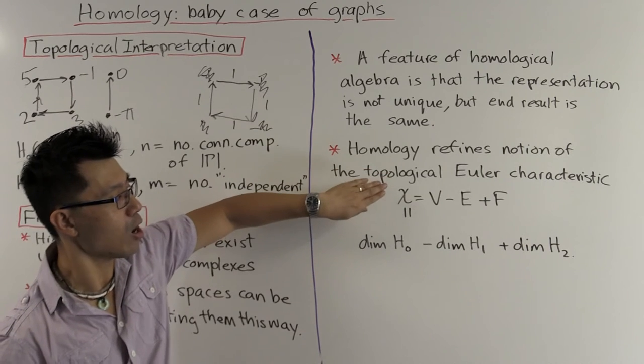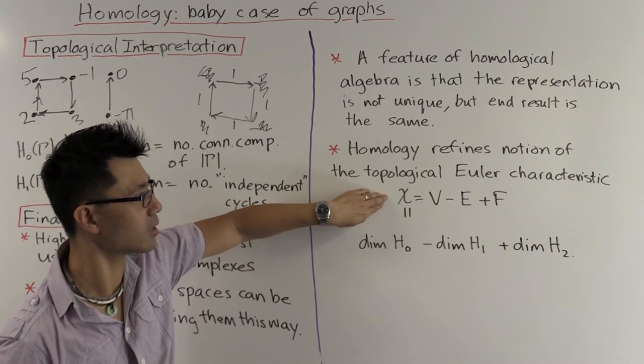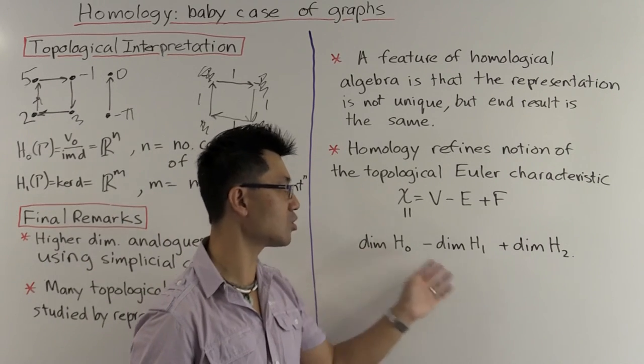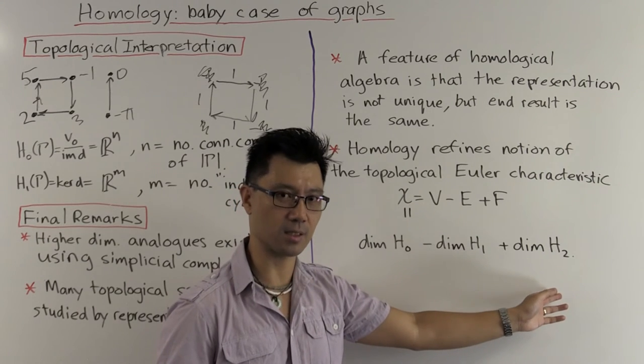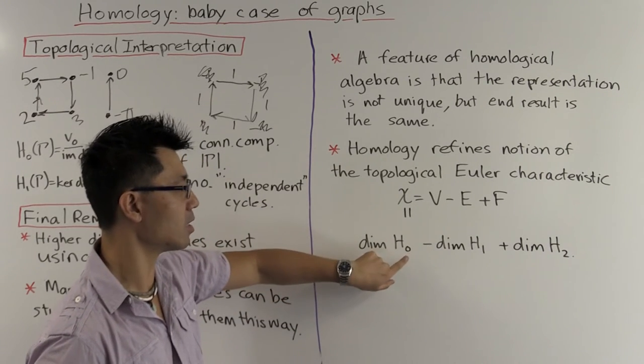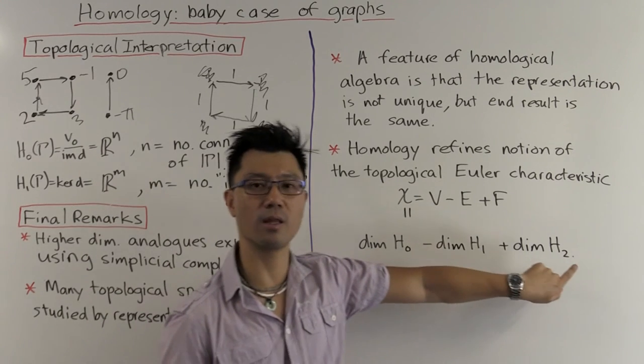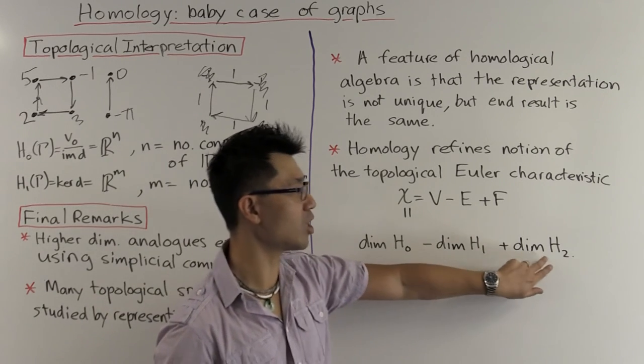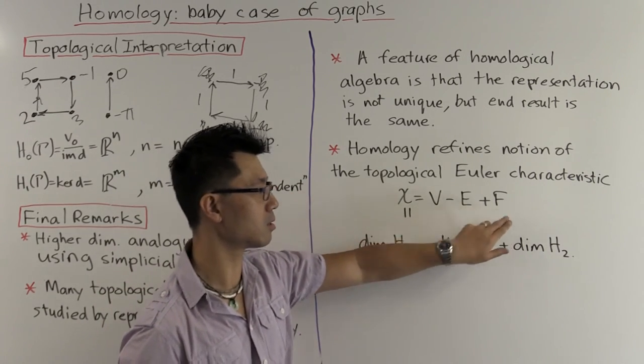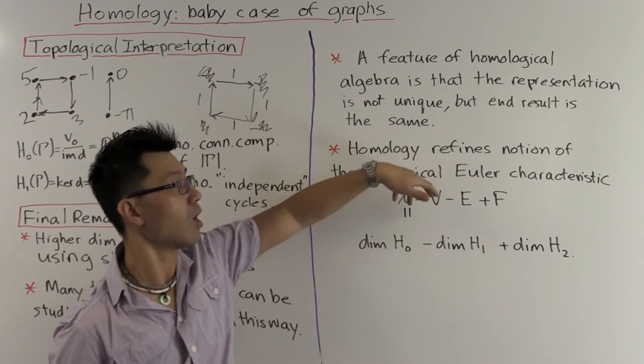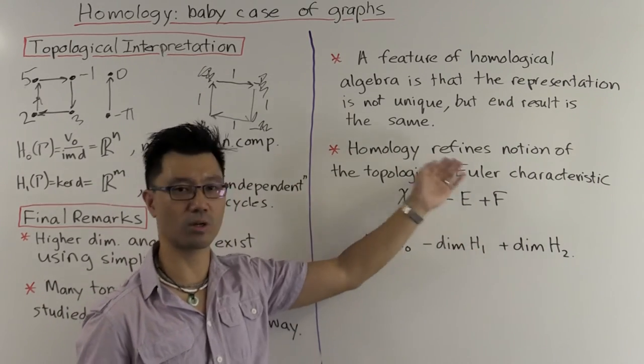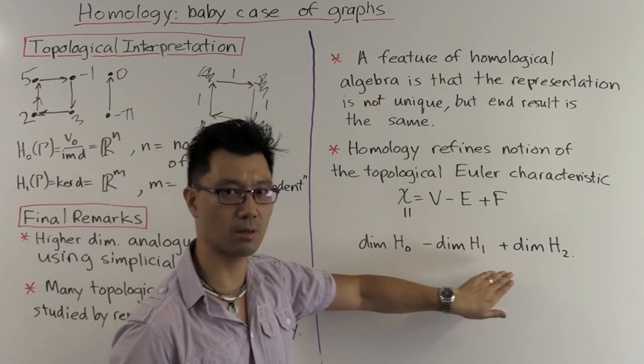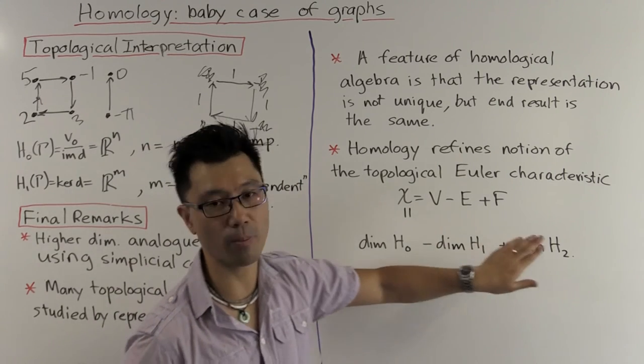Well, the point is that homology in many ways is a refinement of this topological invariant. You can actually rewrite this topological Euler characteristic, in the case of a compact-oriented surface, as an alternating sum of three dimensions of vector spaces. And those vector spaces are the zeroth homology, the first homology, and the second homology. And these three numbers don't change, unlike these three numbers. So what was previously just a single topological invariant, this Euler characteristic, has now been split into three invariants.